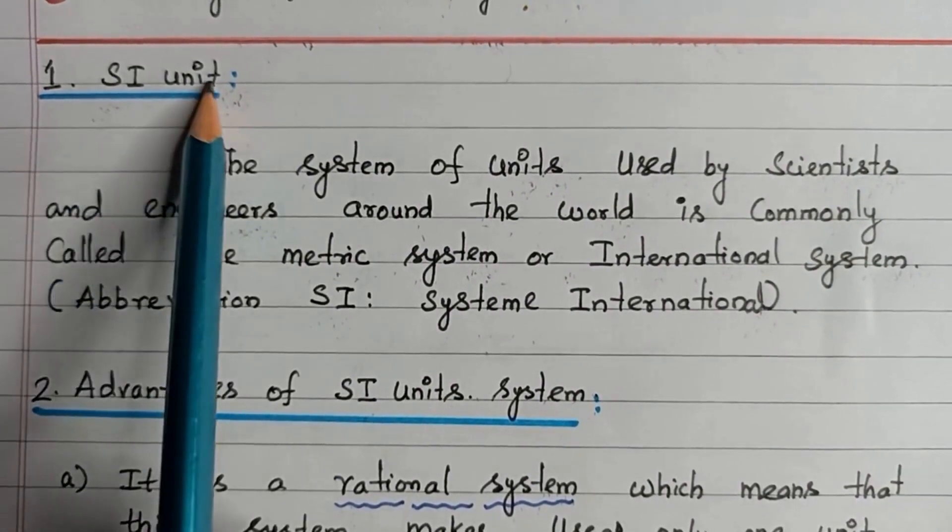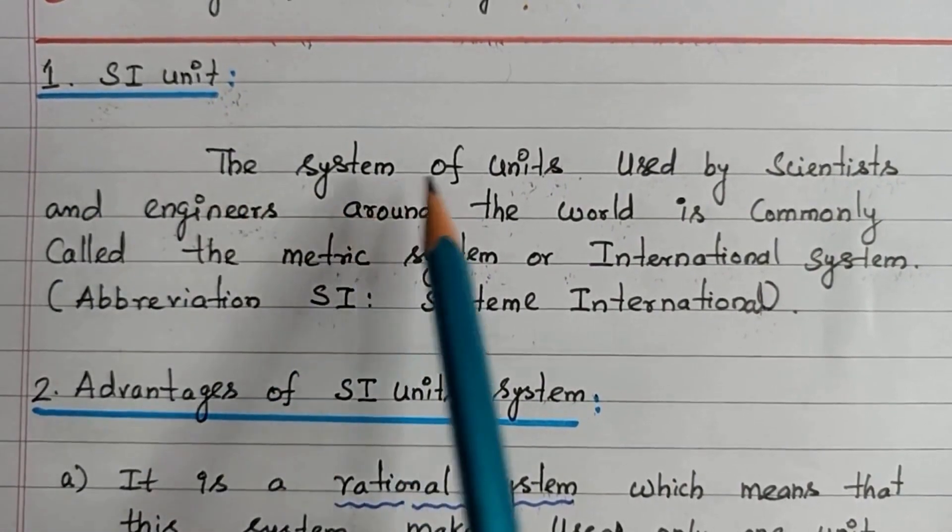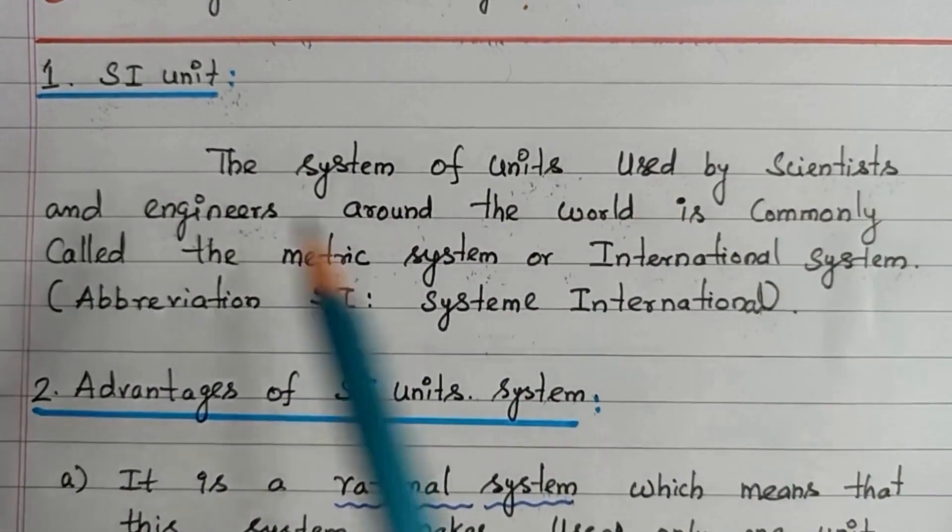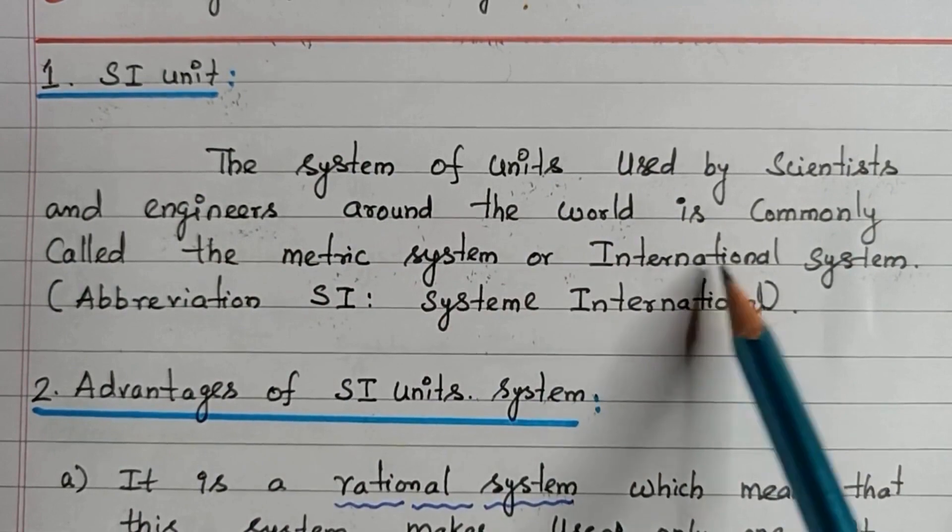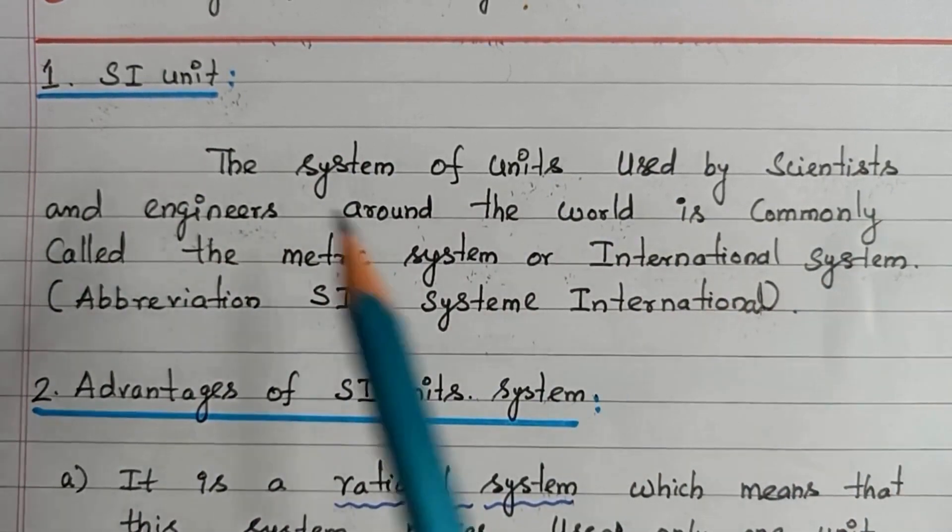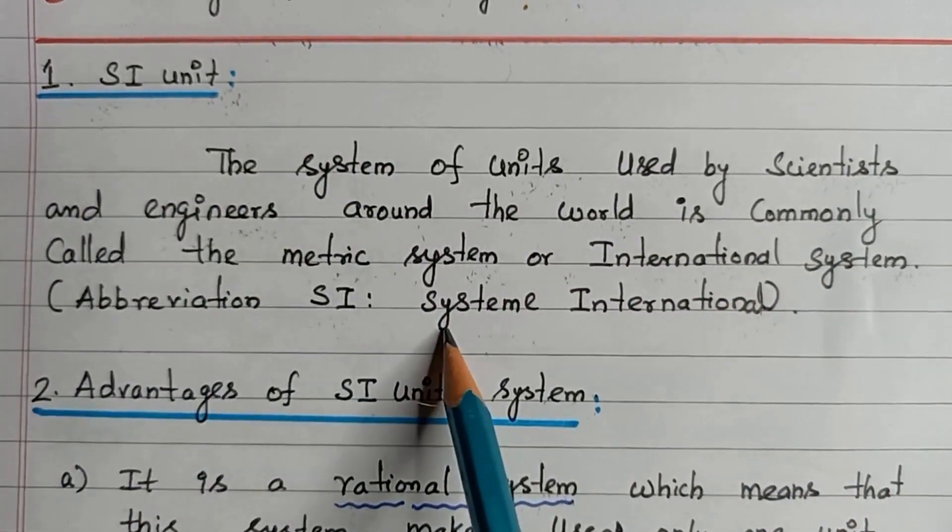First, SI Unit System. The system of units used by scientists and engineers around the world is commonly called the metric system or international system. The abbreviation SI stands for Système International.